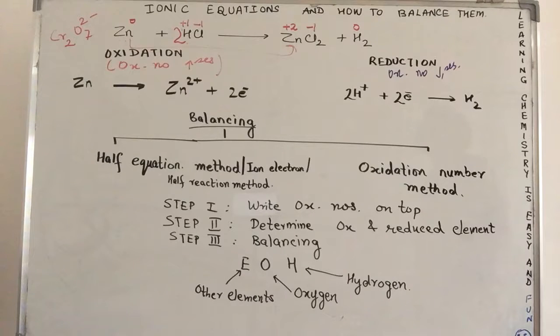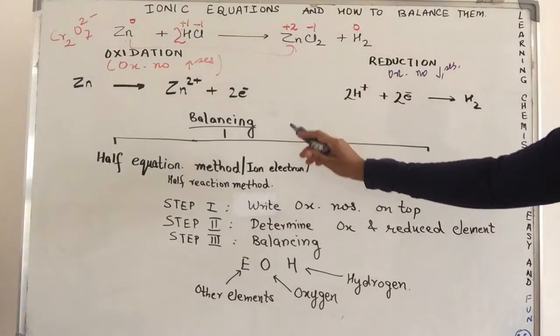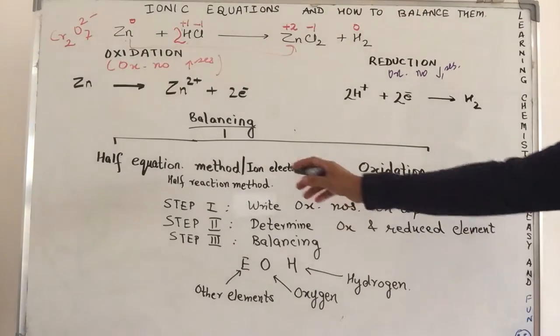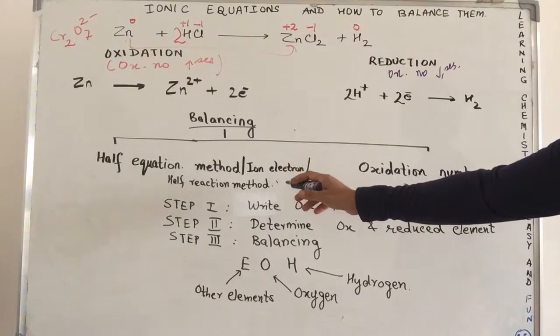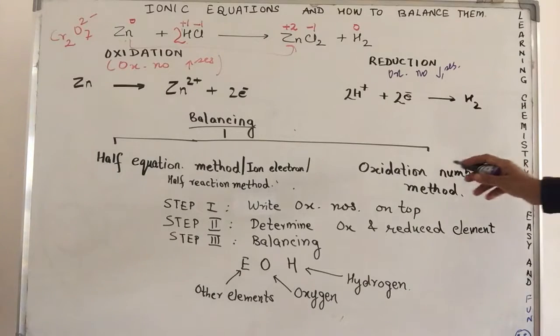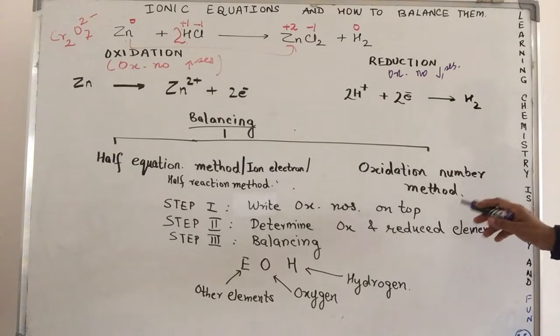How do we balance ionic equations? We shall be doing two methods in order to do so. Half equation method also called is the ion electron method or the half reaction method. The other is the oxidation number method.